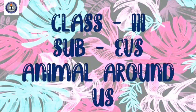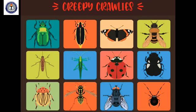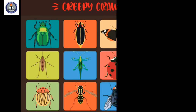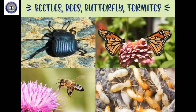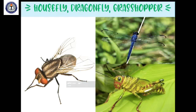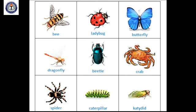Hello children, today I am going to explain the topic: creepy crawlies. We see many tiny creatures around us — beetles, bees, butterflies, termites, housefly, dragonfly, grasshopper, and more. These are creepy crawlies animals. They crawl and creep on the ground, and sometimes they have wings — one or two pairs — so that they can fly.